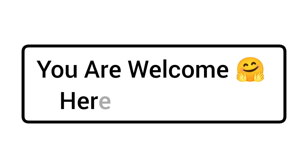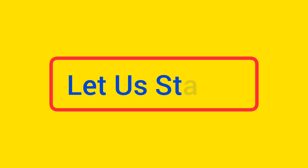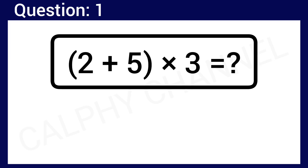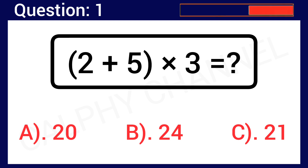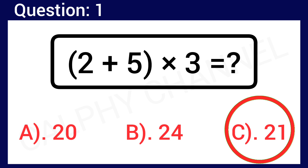You are welcome here once again. You have only 10 seconds to answer each question. Question 1: 2 plus 5 in the bracket times 3 is worth what? Drop your answer in the comment section below. Option A: 20, Option B: 24, Option C: 21. The correct answer is Option C, which is 21.